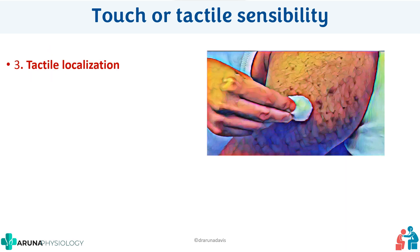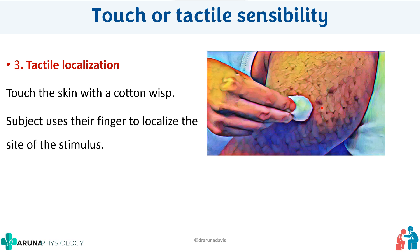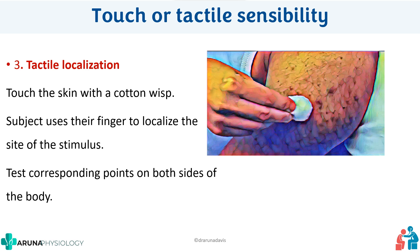Next we have to test for tactile localization. In tactile localization, we touch the subject with cotton at one point and ask the subject to localize where we touched using his finger. The subject must close his eyes. We touch his hand and he has to localize where we touched. This also has to be done bilaterally.